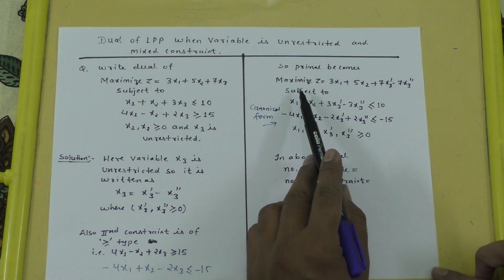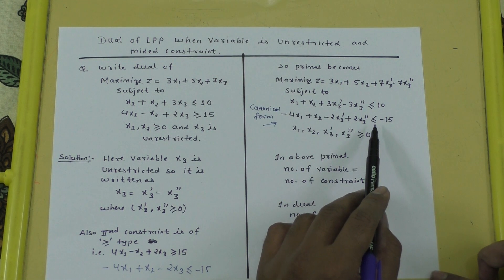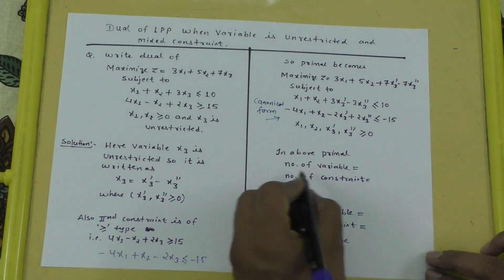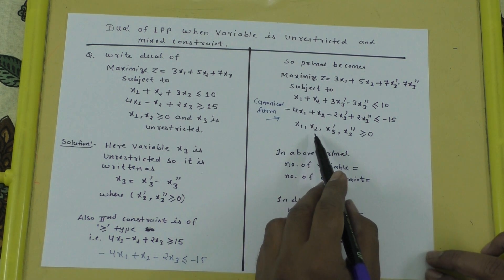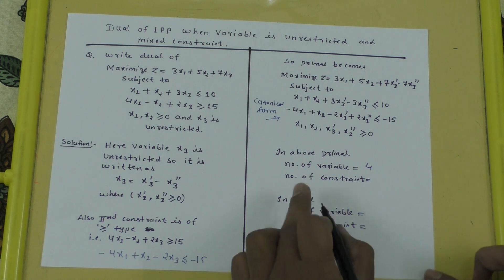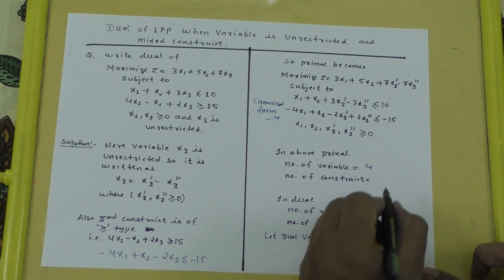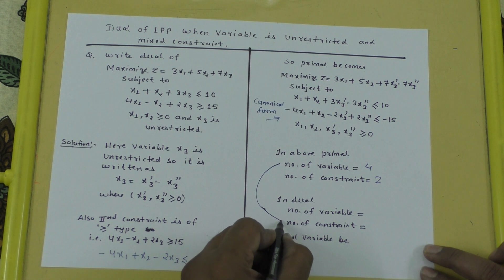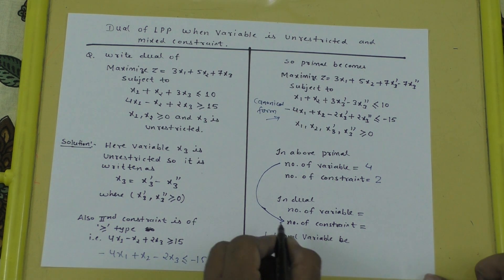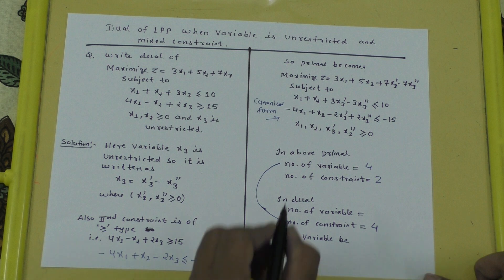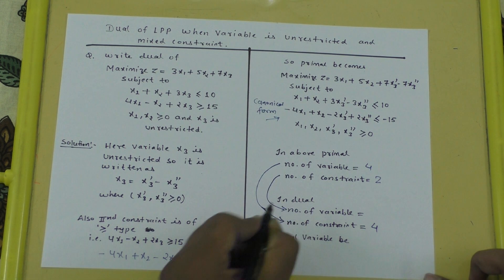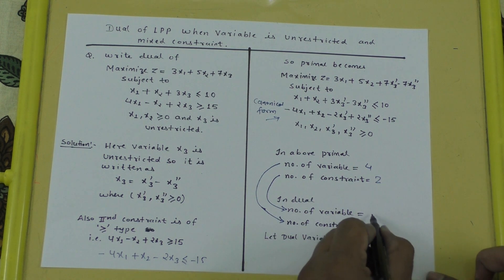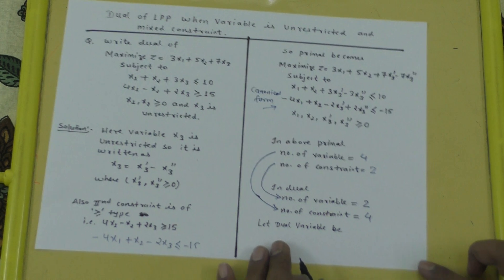Since the number of constraints in the primal is 2, in the dual the number of variables will also be 2. We assume the two dual variables are y1 and y2.